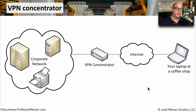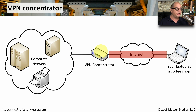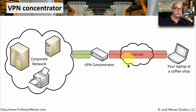Here's an example of how this VPN concentrator works. You have all your corporate data on the private corporate network, and there's a VPN concentrator between the corporate network and the rest of the world. You might be at a coffee shop — you launch your VPN software, and it creates an encrypted tunnel from your laptop to the VPN concentrator. The VPN concentrator decrypts that information and passes it to the internal network. To send information back to you, that information is sent to the concentrator, which encrypts it and sends it through the tunnel back to your laptop.